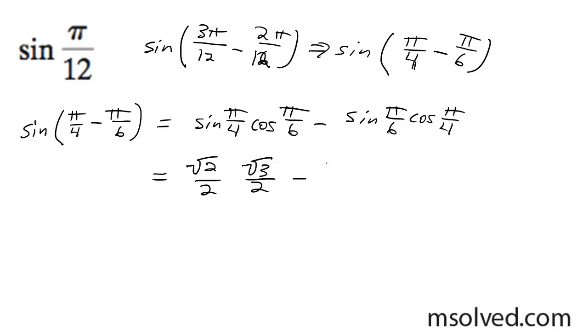Sine of π over 6 is equal to 1 half, and cosine of π over 4 is equal to √2 over 2. Multiply these out, and I'm going to get √6 over 4 minus √2 over 4.